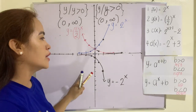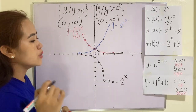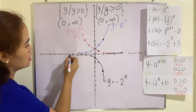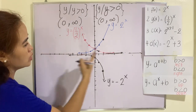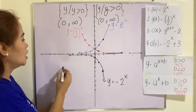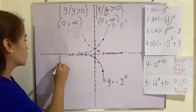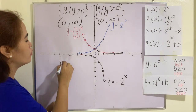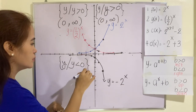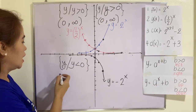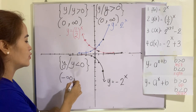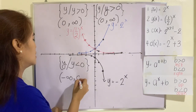What about the reflected function? How are we going to get the range? As you can see, this is again asymptotic to the x-axis, so it never goes up, meaning your range will be the set of all y's such that y is less than zero. In interval notation, this is negative infinity to zero.